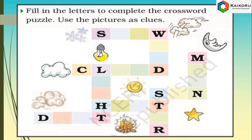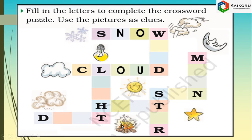Fill in the letters to complete the crossword puzzle. Use the pictures as clues. What is this? This is snowflake — S-N-O-W. What is this? This is cloud — C-L-O-U-D. And what is this? This is fire which generates heat — H-E-A-T.